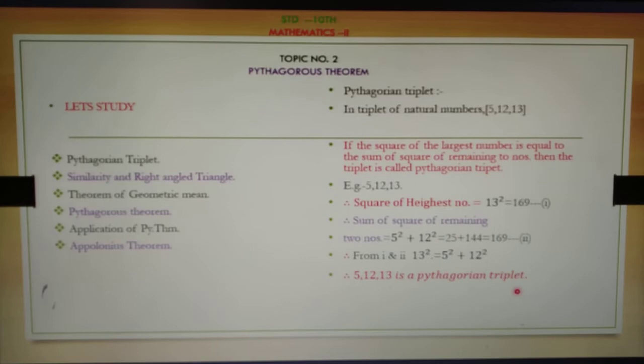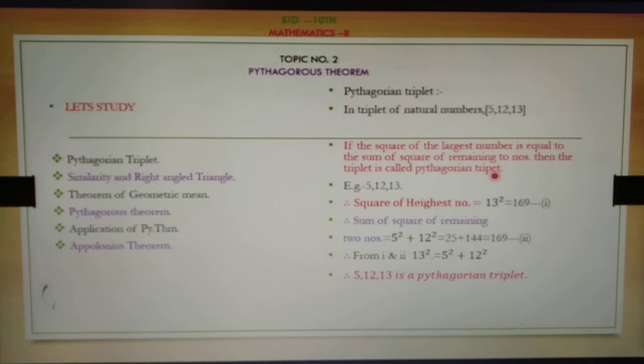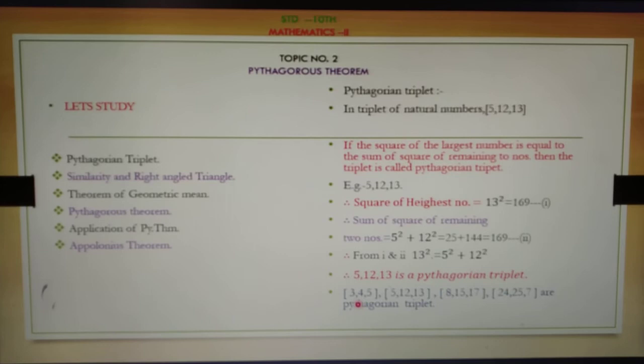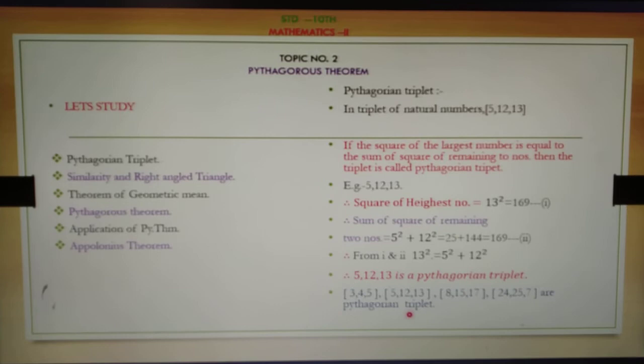In this way we can check which sets of numbers are Pythagorean triplets: the square of the largest number must equal the sum of the squares of the remaining two numbers. Other examples of Pythagorean triplets are: 3, 4, 5; 5, 12, 13; 8, 15, 17; and 7, 24, 25.